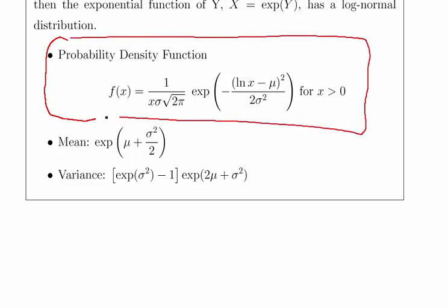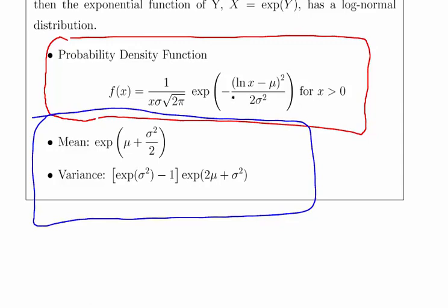So, this is the pdf and we're going to use that in part A of our question. And this is the definitions of the mean and the variance in terms of mu and sigma. Now, so it's actually straightforward enough. So, these formulas should be available to you somewhere in the back of the exam paper or the log tables or something like that.